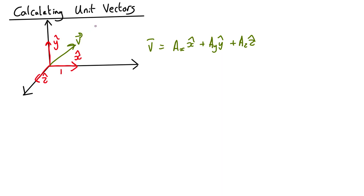Now if the length of V is more than 1, then a unit vector will be shorter in the same direction. If the length of V is less than 1, it will be longer, but it will always point the same way. The way you work it out, the unit vector is just a normal